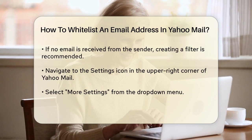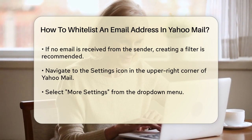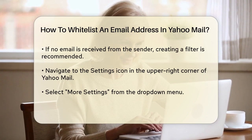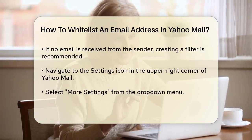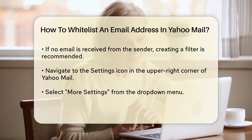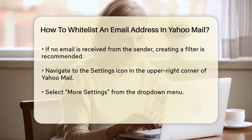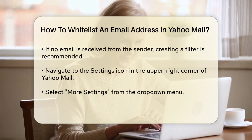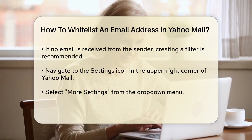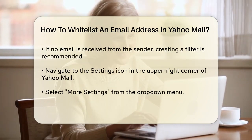Now, if you haven't received an email from this sender yet, or if you want to make sure all emails from them go straight to your inbox, creating a filter is the way to go. To create a filter, navigate to the settings icon in the upper right corner of your Yahoo Mail page. Click on this icon and then select More Settings from the drop-down menu. From here, go to the Filters tab and click on Add New Filters.